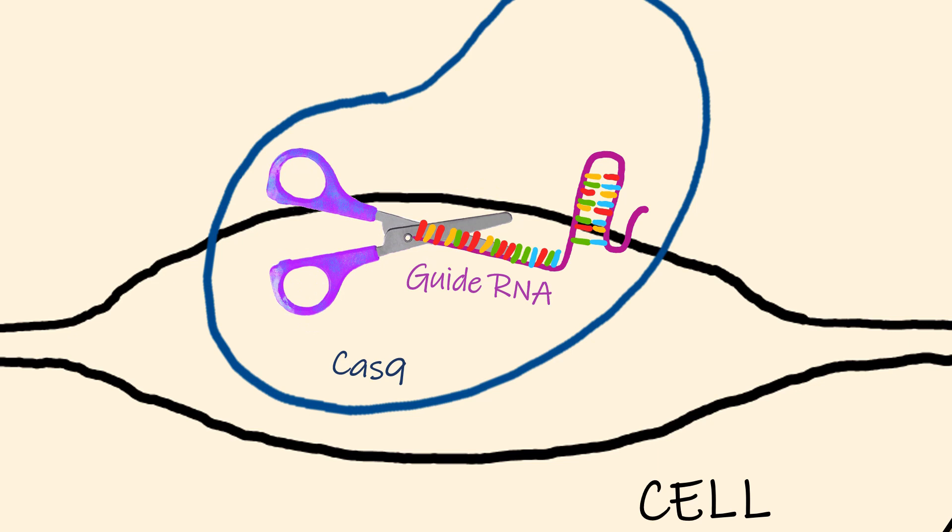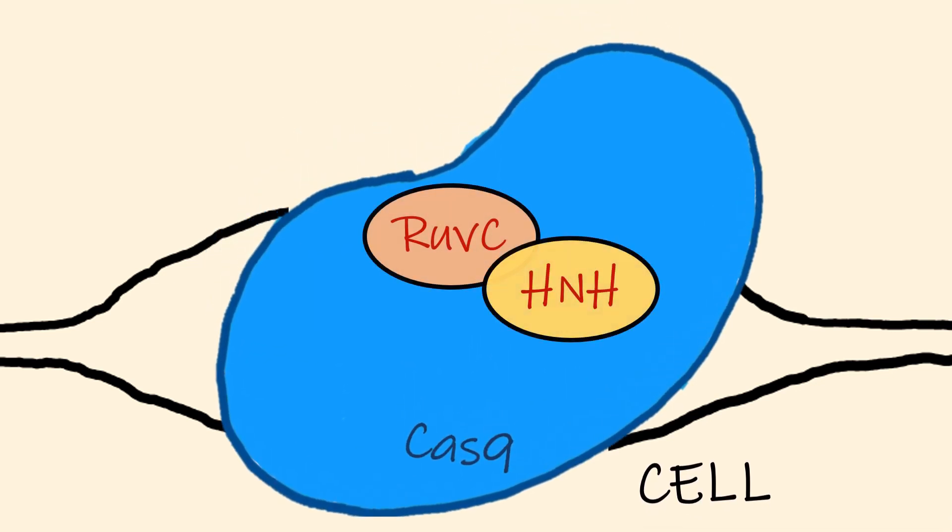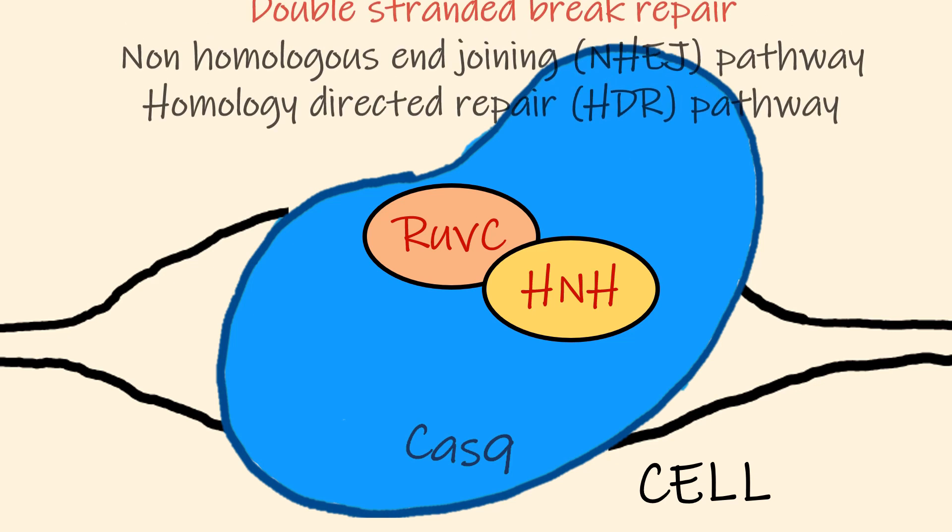The guide RNA binds to the complementary target DNA of the host cell in the 3' to 5' direction. After binding to the target site, Cas9 undergoes a second conformational change which exposes the nuclease domains RuvC and HNH to cleave the opposite strands of the target DNA, leading to a double-stranded break with blunt ends.